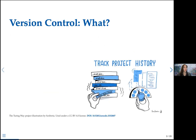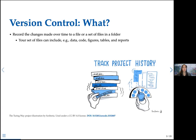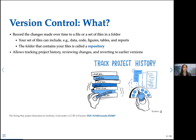When we use version control, we record the changes we make over time to a file or set of files in a project folder. This folder can include anything from data to code to figures, tables, reports, or even entire manuscripts. The folder that contains these files is called your repository. Version control allows you to track your project history, review changes to your files, and revert to earlier versions if necessary. The version control system I'll be talking about today is Git, though others like Mercurial and SVN also exist.